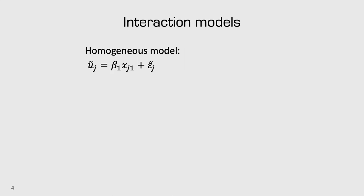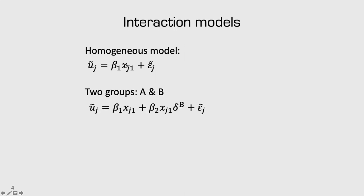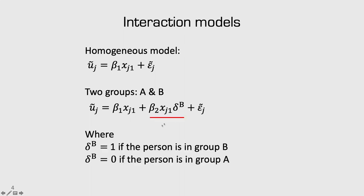Let's start with interaction models. Say we have a very simple homogeneous model with one coefficient beta 1 and one attribute x1. If we had two different groups, group A and group B, one way we could separate out the effect from x1 is to add an interaction term. Here we have beta 2 times x1 multiplied by a dummy coefficient delta, which takes a value of 1 if the person is in group B and 0 otherwise.